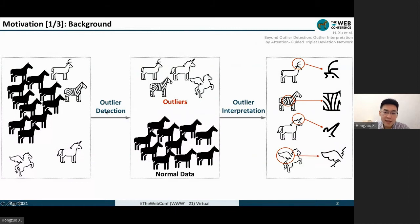Outlier Detection is to predict the outlier animals: deer, zebra, unicorn, and pegasus.